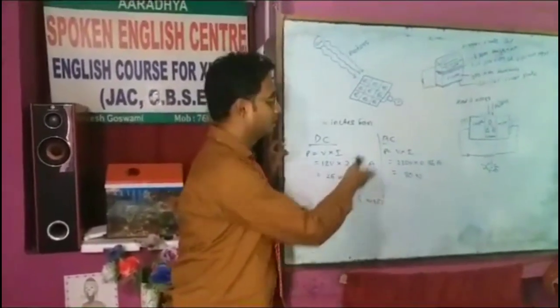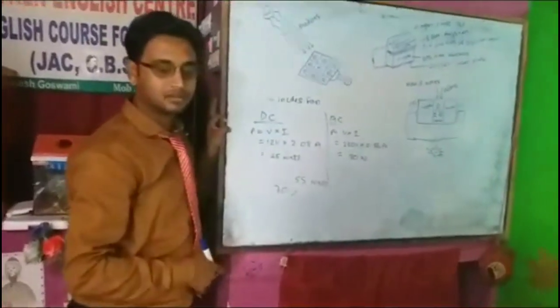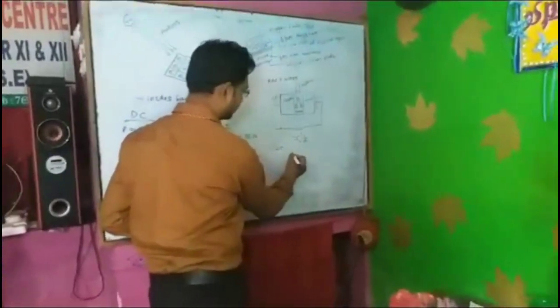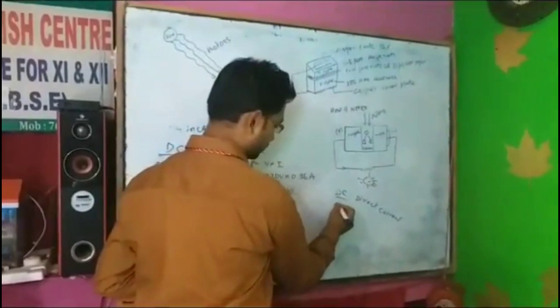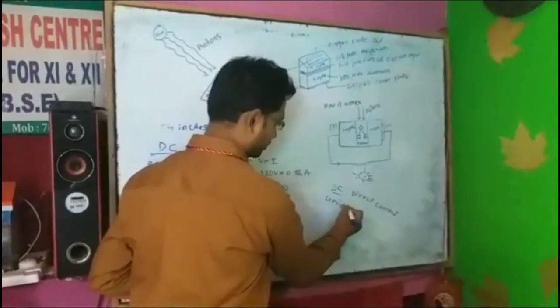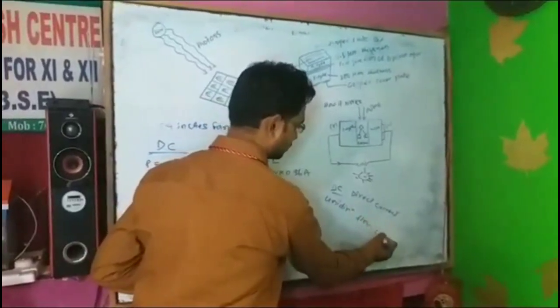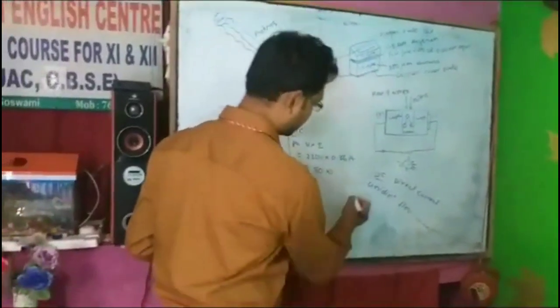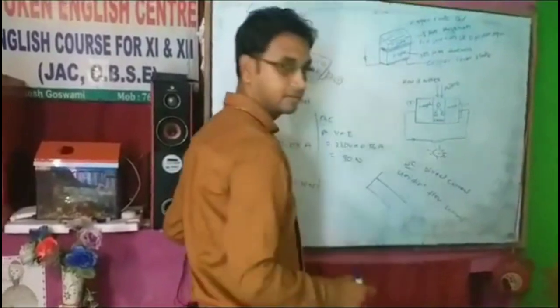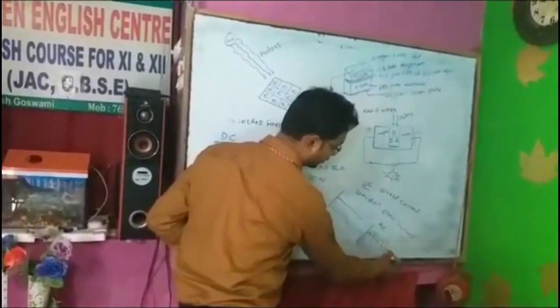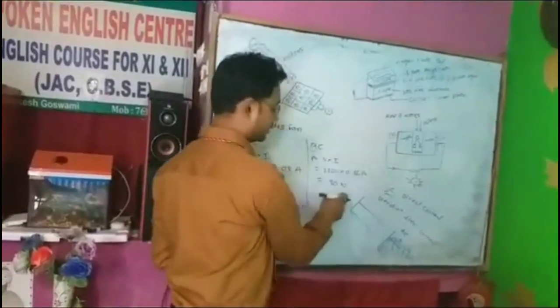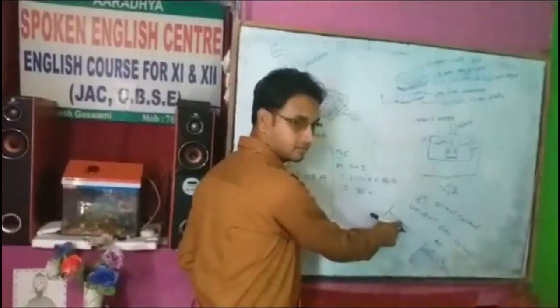So these are your losses — appliances run by AC current have many losses. What is DC? DC means direct current. DC current always flows in one direction; it is also called unidirectional flow current. Its graph is a straight line. The AC current graph changes constantly — plus, minus, plus, minus. But in DC current, its frequency remains constant.